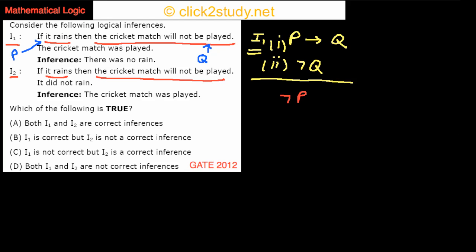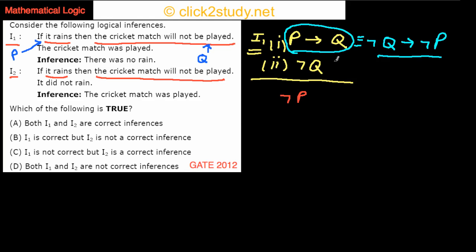If you remember this identity: P implies Q is equivalent to its contrapositive, which is not-Q implies not-P. We know that not-Q is true, so by the contrapositive, we can infer not-P. Therefore, inference I1 is correct.